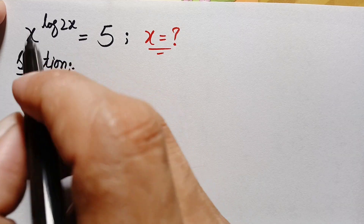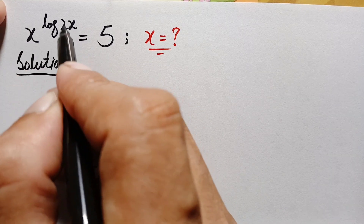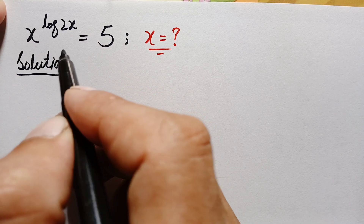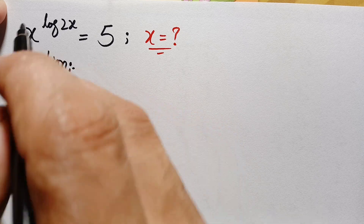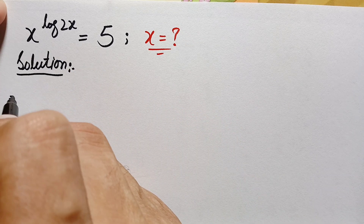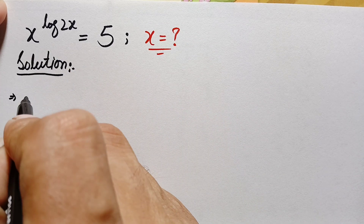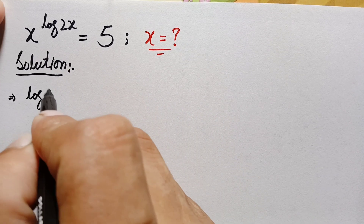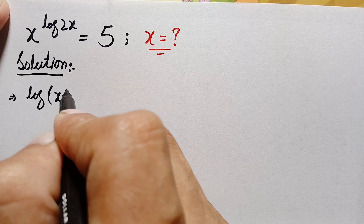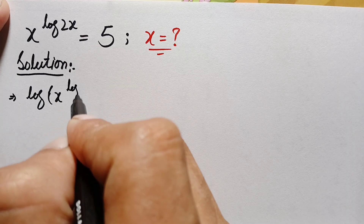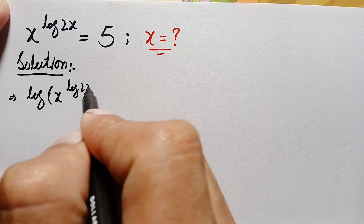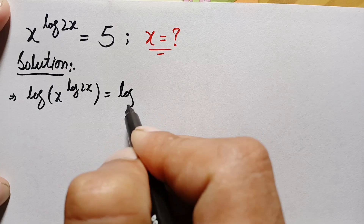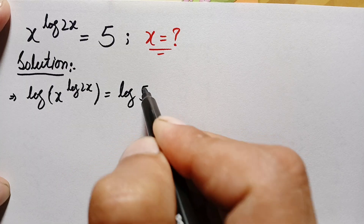Looking at the left hand side, there is x in the power. So here we will take common log on both sides of this equation. This becomes: log of x raised to power log of 2x is equal to log of 5.